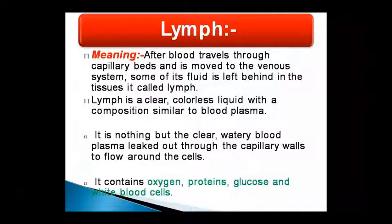The lymphatic collecting vessels and capillary bed travel after the venous system. As the blood moves, during that period the fluid is left behind in the tissue — this is called lymph. When the blood capillary bed travels and moves on through the venous system, the fluid left behind in the tissue is called lymph. Lymph is a clear, colorless liquid which is made like blood plasma — it has the same composition as blood plasma. It is clear, watery blood plasma which has leaked from the capillary wall and flows around the cells.